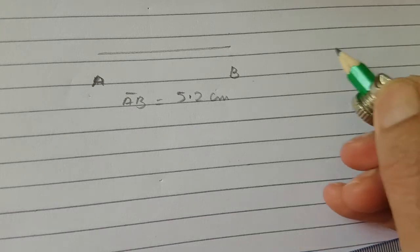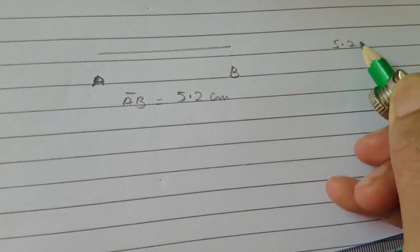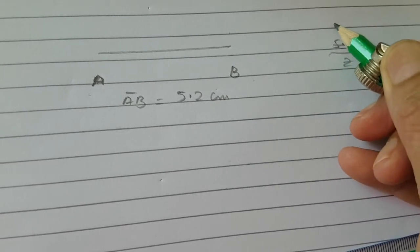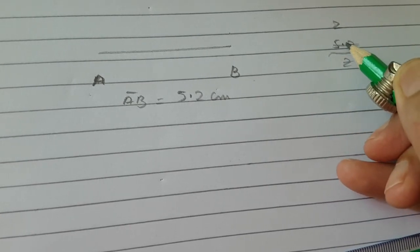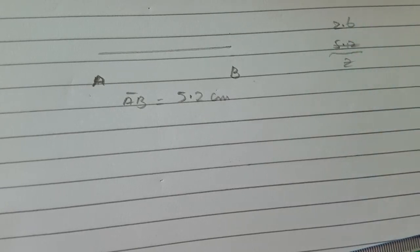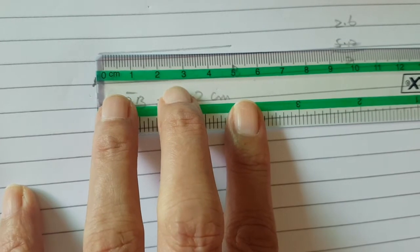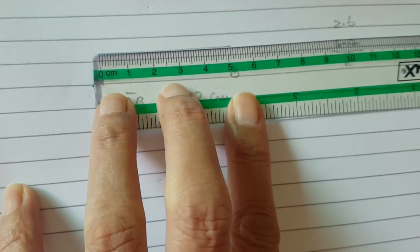5.2 divided by 2 gives you the half of the line. Two times 2 is 4 and 1 left, 12 divided by 2 is 6, so 2.6. We will take the midpoint of line 5.2.